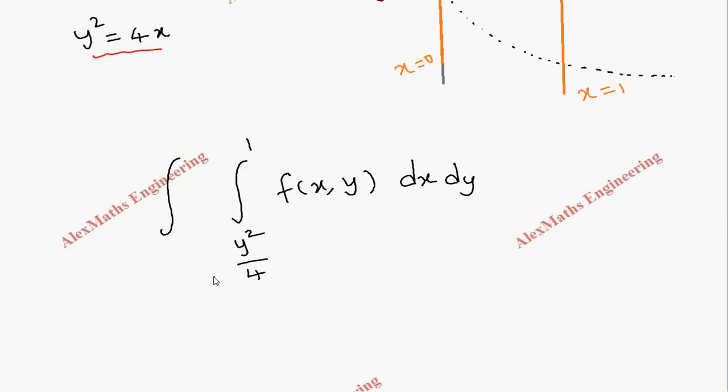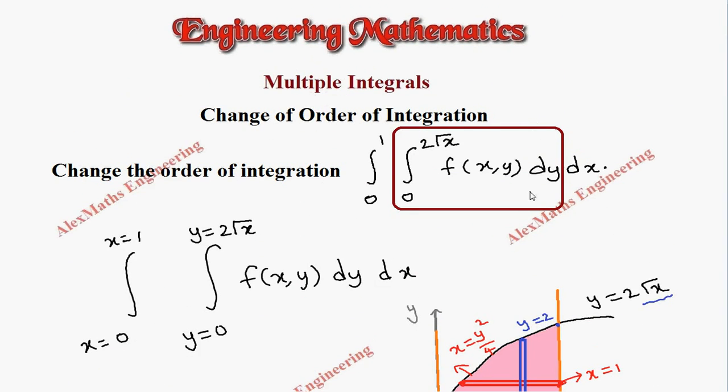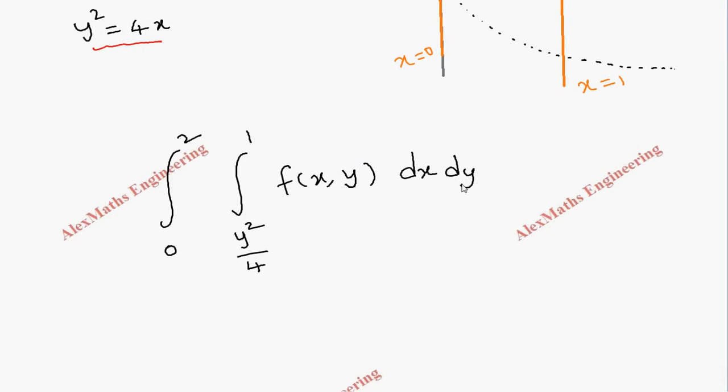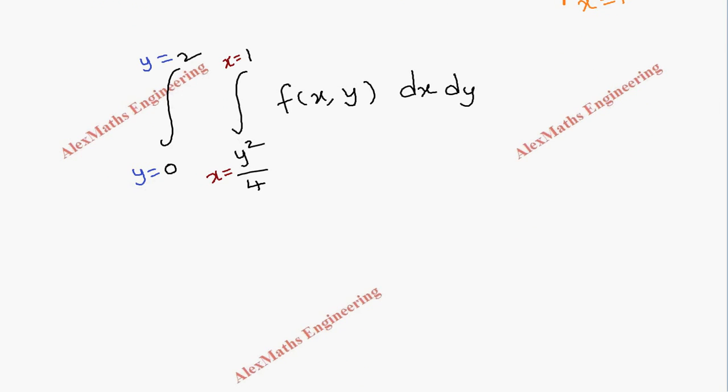So the limit ranges from 0 to 2. So initially we had dy dx that we changed into dx dy. And this value represents the limit of x and another one represents the limit of y, y equal to 0, y equal to 2. So clearly writing it again, integral, double integral, 0 to 2, other is y square by 4 till 1, f of x comma y, dx dy.